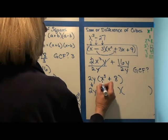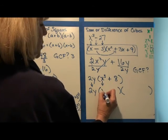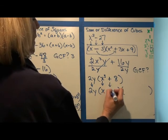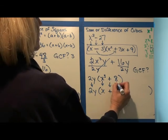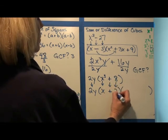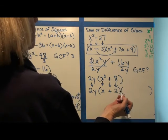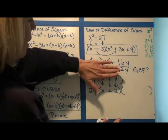And then we're going to have two more factors. The first one is the cube root of y cubed, which is y. Copy the sign down, which is plus. Take the cube root of 8, which is 2.